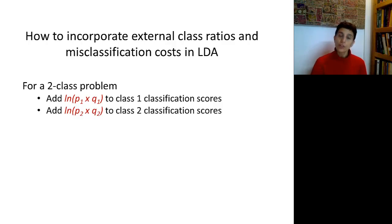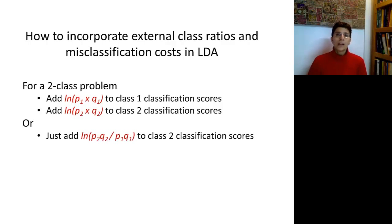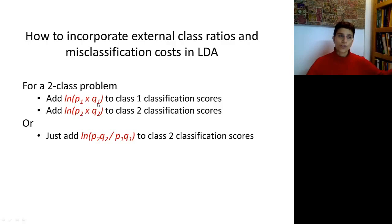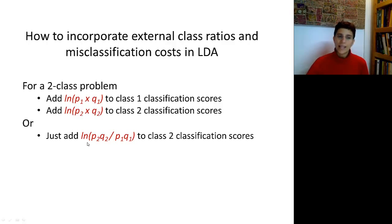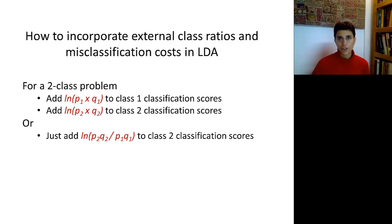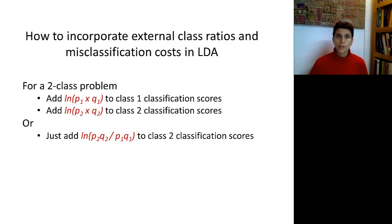We can simplify this even further. Instead of adding log(P1 × Q1) to the class 1 scores and log(P2 × Q2) to the class 2 scores, we can simply add log((P2 × Q2) / (P1 × Q1)) only to the class 2 classification scores or constant. Either approach is mathematically equivalent, and the software might choose one or the other.